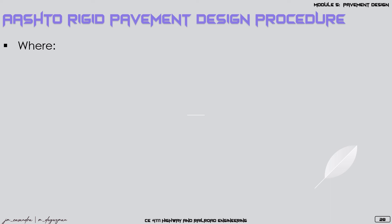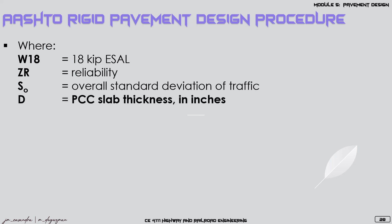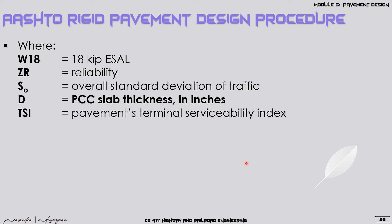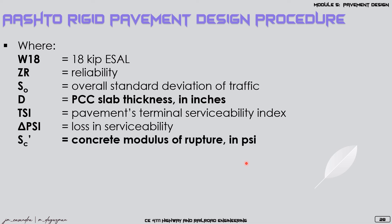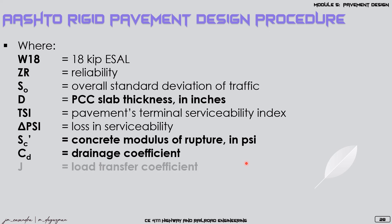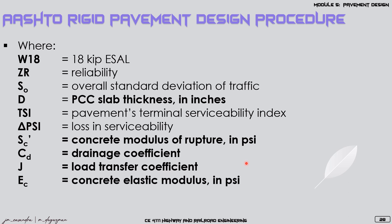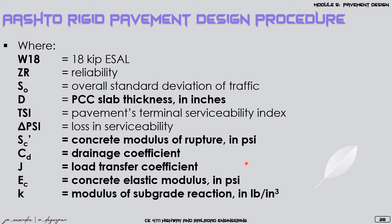The variables for the rigid pavement design equation include: W18, the 18-kip equivalent single axle load; ZR, the reliability; S₀, the overall standard deviation of traffic; D, the PCC slab thickness in inches; ΔPSI, the loss in serviceability; TSI, the terminal serviceability index; S_c, the concrete modulus of rupture measured in pounds per square inch; C_D, the drainage coefficient; J, the load transfer coefficient; E_C, the concrete elastic modulus measured in pounds per square inch; and k, the modulus of subgrade reaction in pounds per cubic inch.